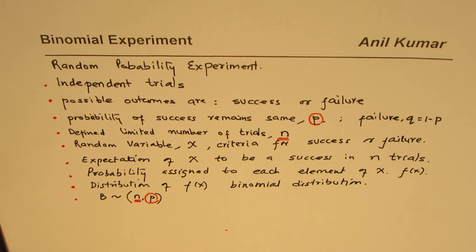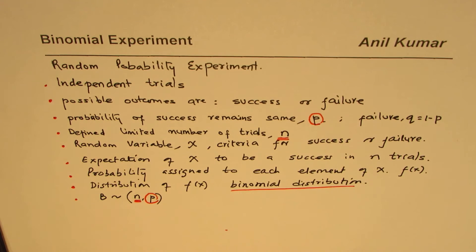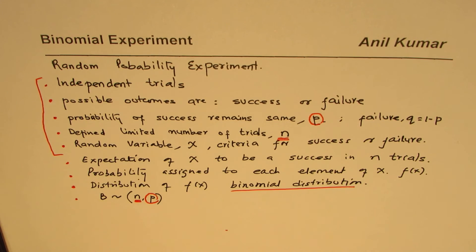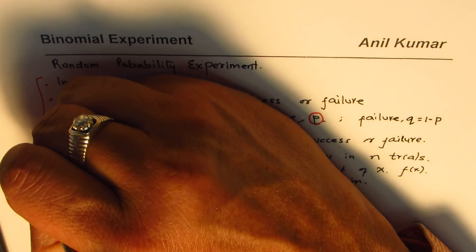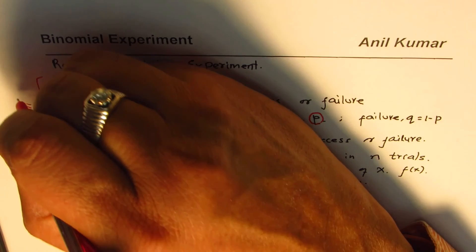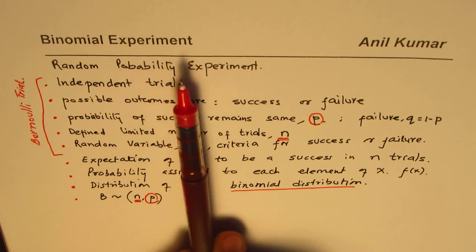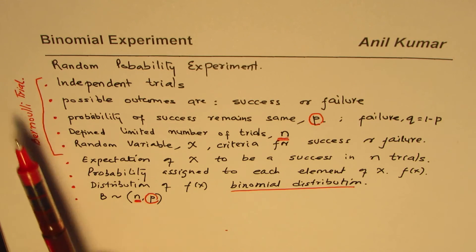We're not giving formulas here; we'll move on to the next video to see how to evaluate this binomial distribution. But I hope you've understood what a binomial experiment is. If you look at all these criteria, all of this is referring to Bernoulli's trial. So in short, a binomial experiment is one in which each trial is a Bernoulli's trial.